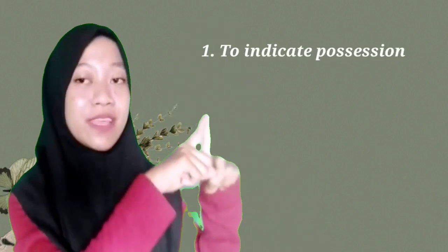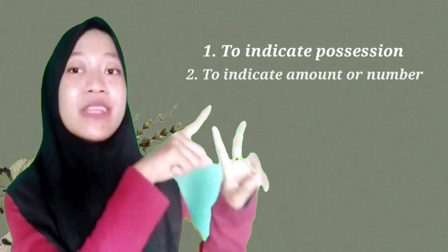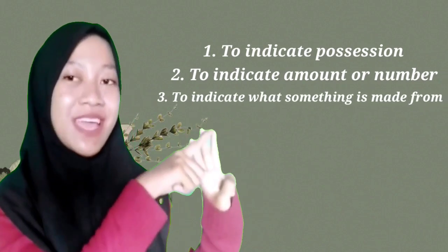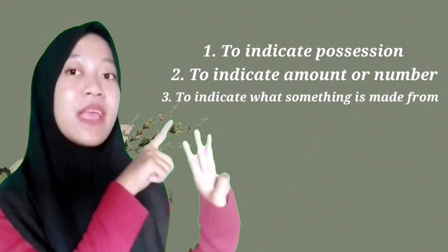Before we choose which preposition should be used in the sentence, we will first learn about the use of the preposition 'of' in a sentence. The preposition 'of' is used to indicate possession, to indicate amount or number, and to indicate what something is made from. I will explain one by one.